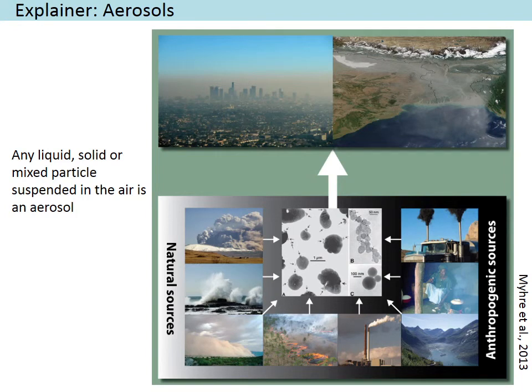Aerosols are all around us — they're in this room, they're in the atmosphere. We emit aerosols in our daily life. Here is a picture of a city; it's got a lot of smoke, a bunch of aerosols. Here are some aerosols coming off a desert. Aerosols also get emitted by volcanoes. We have things like sea spray — salt — and bushfires, which are another source of aerosols, producing lots of smoke.